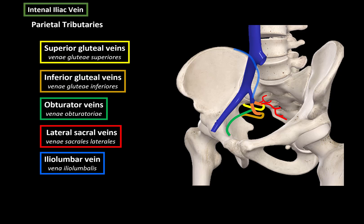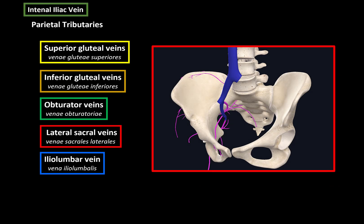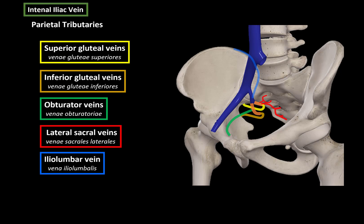There are a lot of variations when you study veins. Here you can see a more correct visual representation of the veins, including the superior and inferior gluteal veins, the obturator vein, the lateral sacral veins, and the iliolumbar veins. That was all for the parietal tributaries of the internal iliac vein.